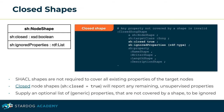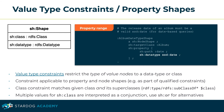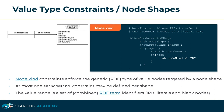SHACL cardinality constraints control the expected range of property occurrences on a focus node. The lower 'minCount' and upper 'maxCount' boundaries are inclusive. Consider using qualified value shapes when the value of the counted property matters. The value type constraints apply equally to property and node shapes. With property shapes, they restrict the type of value nodes to a particular data type or class. The class constraint matches the given class and transitively any of its super classes. Multiple class constraints are interpreted as a conjunction expecting the value node to be an instance of each class. To test for alternative classes, you would need to construct a logical OR constraint.